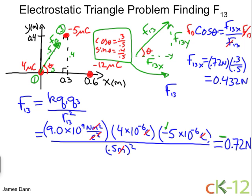Now for the y direction, we do the same thing. We use the fact that sin theta is opposite over hypotenuse. Therefore, the y direction is F13 multiplied by sin theta. Plugging in the numbers, we get 0.72 newtons multiplied by 0.4 over 0.5, because that's what sin theta is here. And that equals 0.576 newtons.